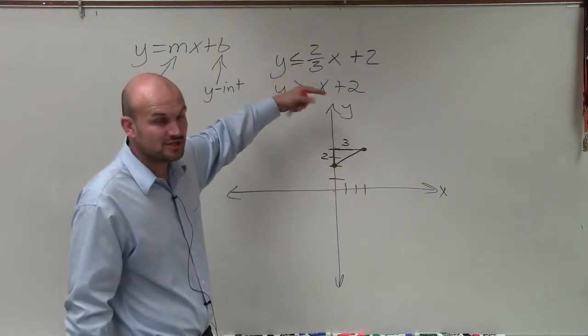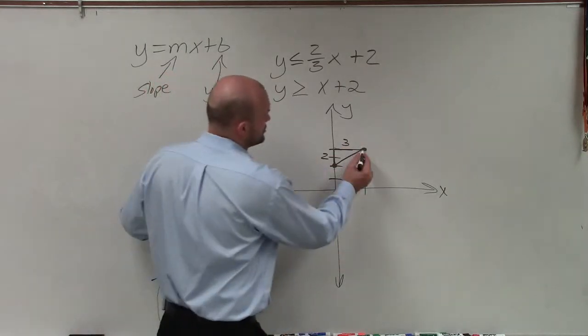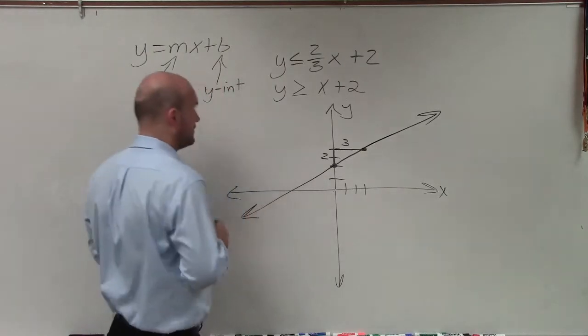The next thing we need to determine is: is our line going to be solid, or is it going to be dashed? Since that's less than or equal to, and not just less than, that means the points that lie on this line are going to be part of the solution. So I am going to keep my line solid.